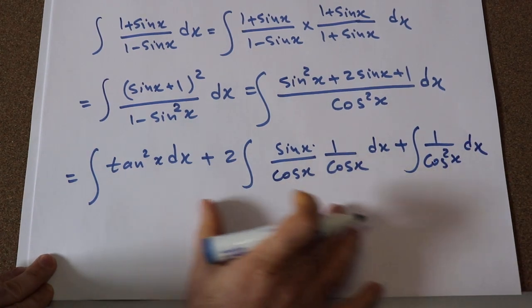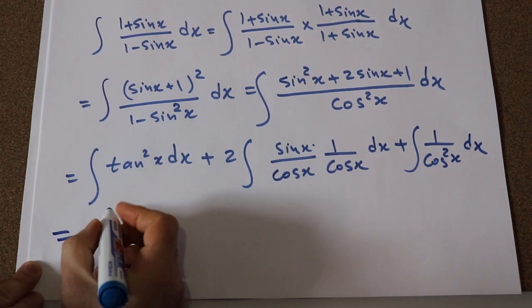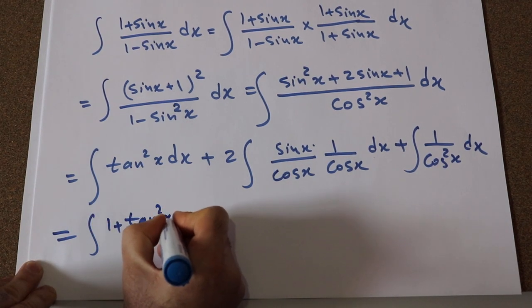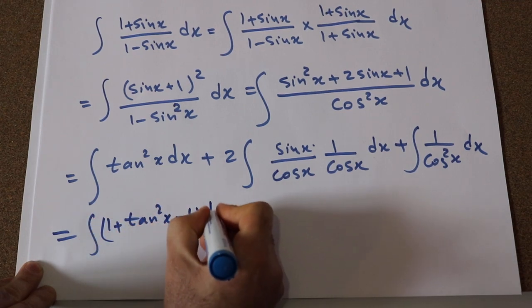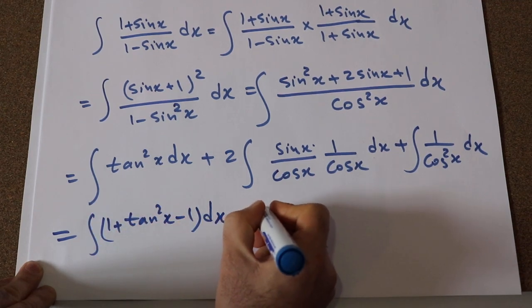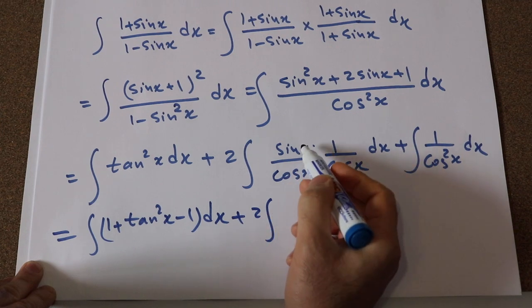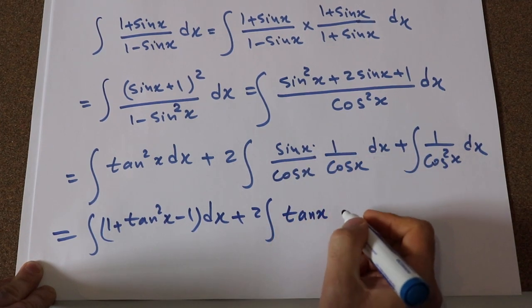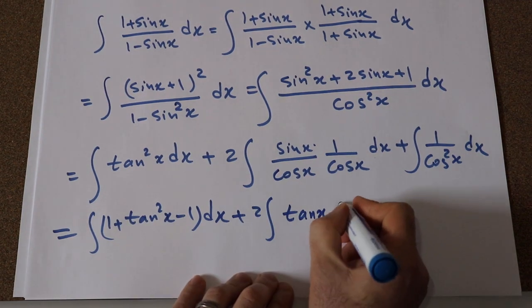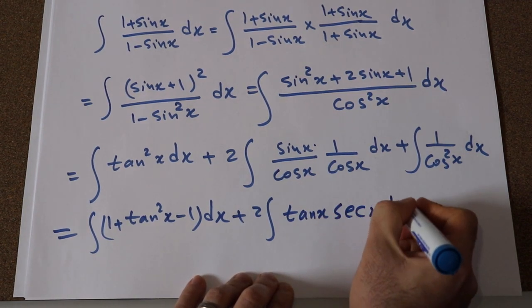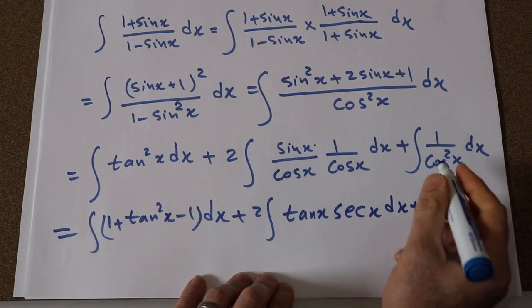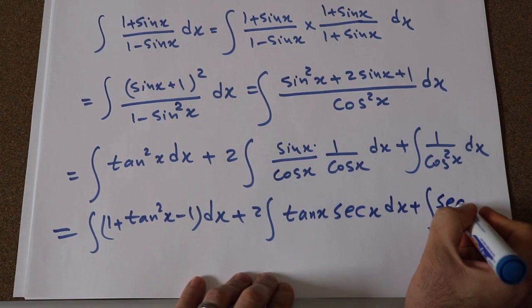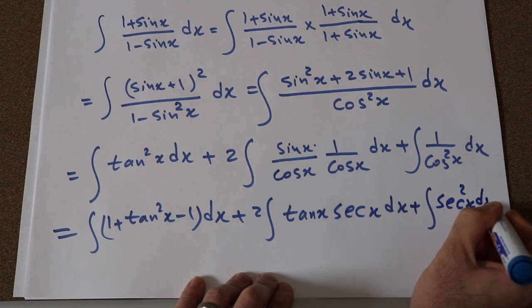So now this expression can be rewritten as the integral of (tan²x + 1 - 1) dx, plus 2 times the integral of sin x over cos x, which is tan x, times 1/cos x, which is sec x dx, plus the integral of 1/cos²x which is sec²x dx.